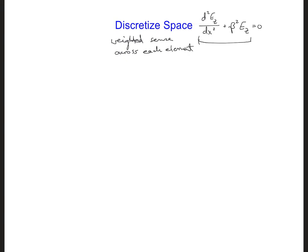Let's take a closer look at this. For FEM we will discretize space into finite elements. For now let's say we'll divide the one-dimensional space we are considering into elements that are all the same size. As with FDTD, it turns out for FEM that we should use about 10 to 20 elements per wavelength.